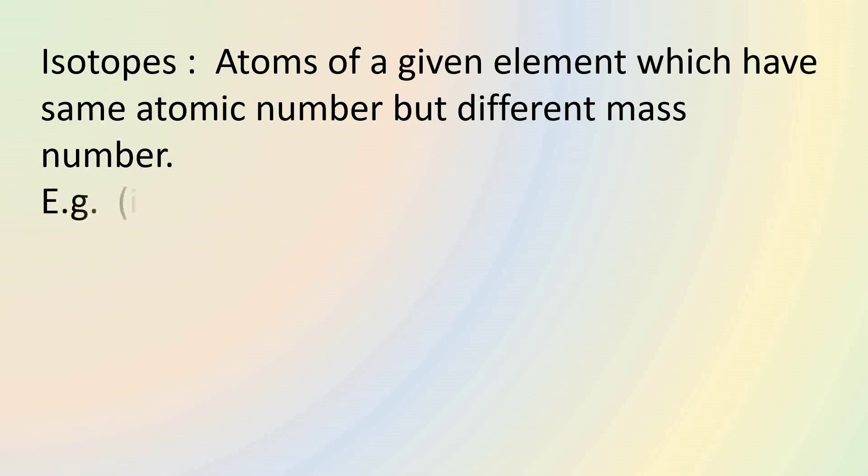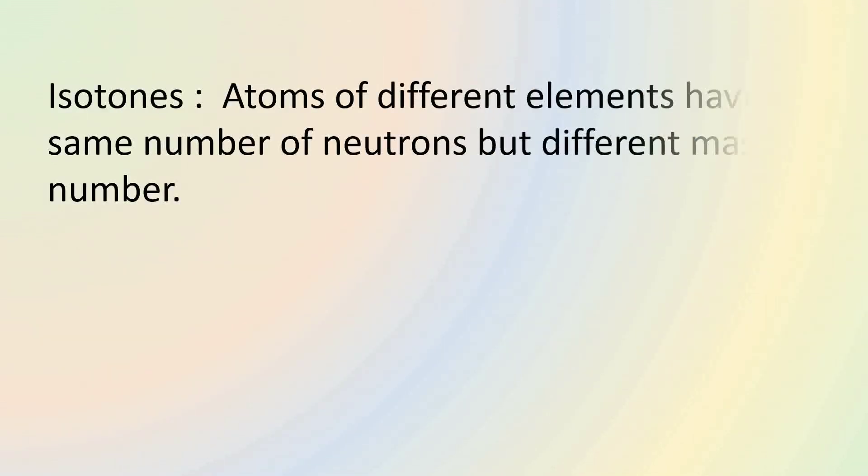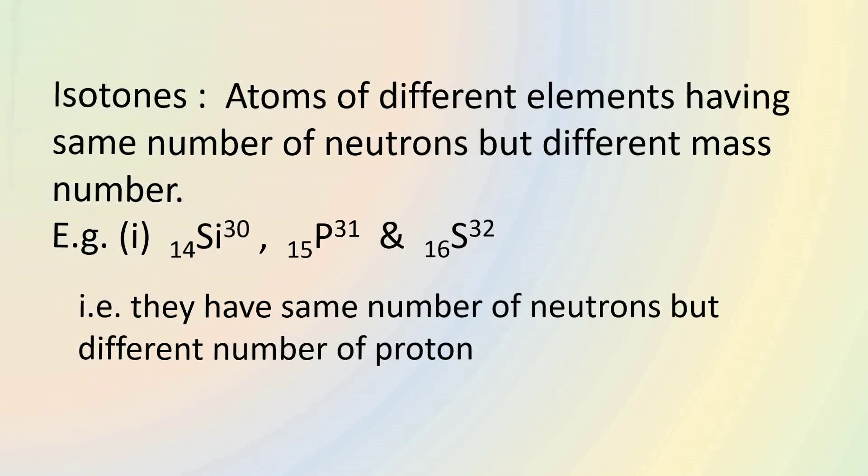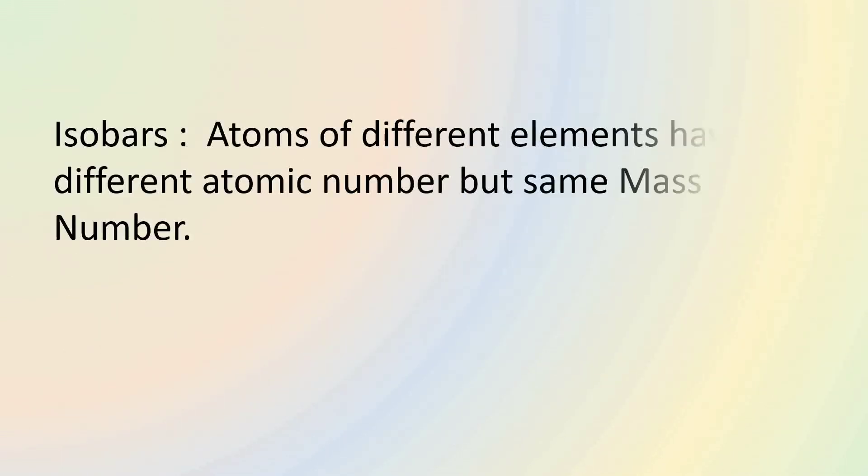Isotopes are atoms of a given element which have same atomic number but different mass number. That means in ¹H¹, ¹H² and ¹H³, the number of protons is same but they have different number of neutrons. Isotones are atoms of different elements having same number of neutrons but different mass number. For example, in silicon, phosphorus and sulfur, their atomic number is different but the number of neutrons are same. And isobars are atoms of different elements having different atomic number but same mass number. For example, in argon, potassium and calcium, they have different proton number and different neutron number but the sum of proton and neutron in all three is same.